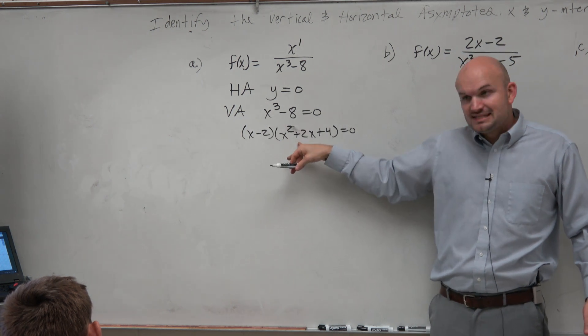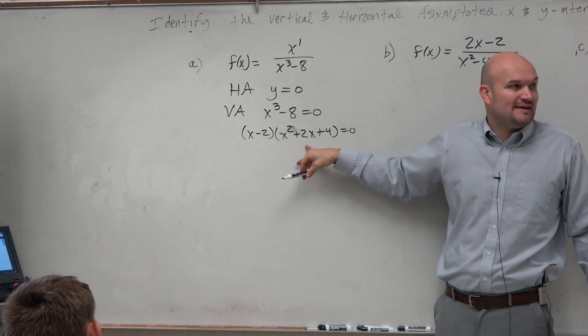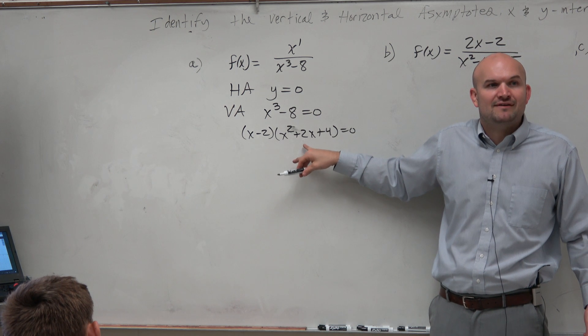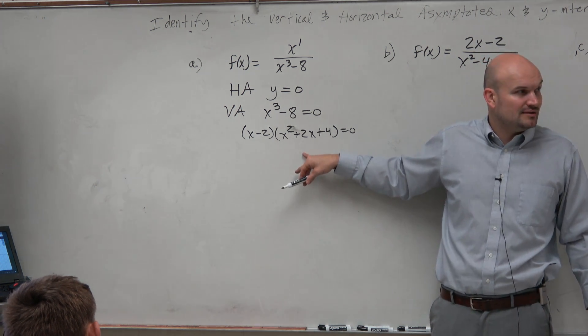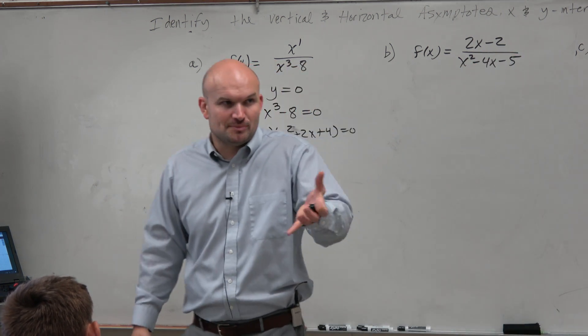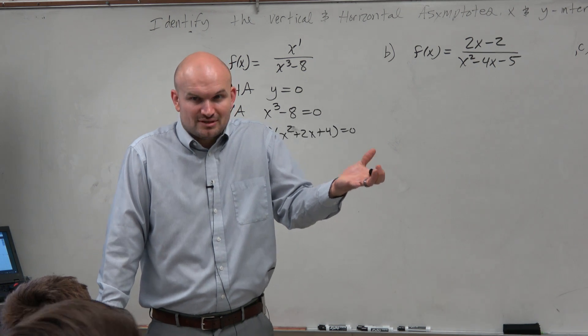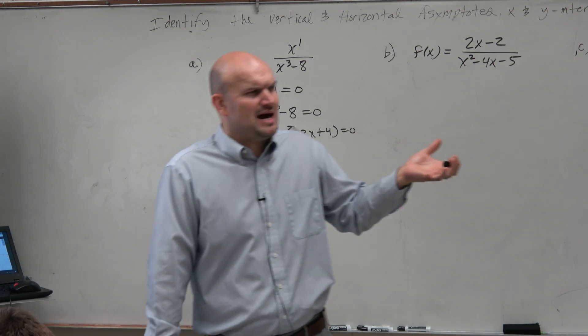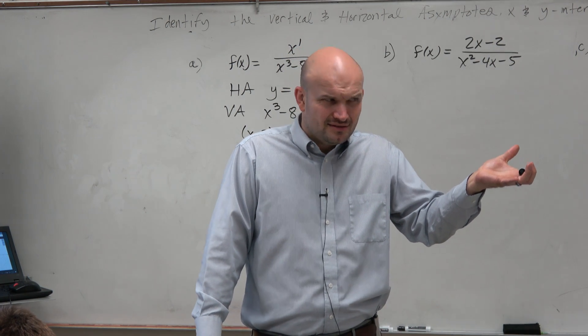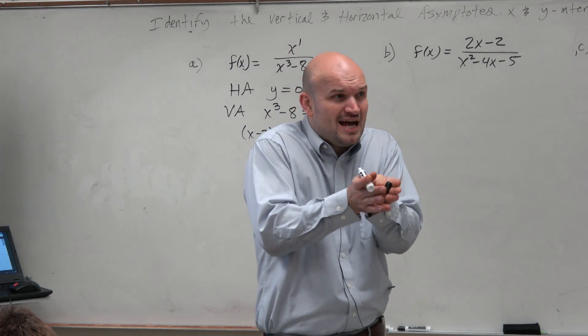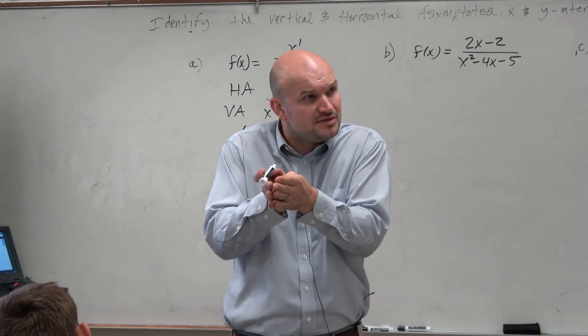But guys, this is non-factorable. So you'd have to do the quadratic formula. And guess what? You would have two complex zeros here. Now, if we're trying to find the vertical asymptotes, do we care about complex where a vertical asymptote occurred at a complex number? No, we're only concerned about where the vertical asymptotes occur at the real numbers.